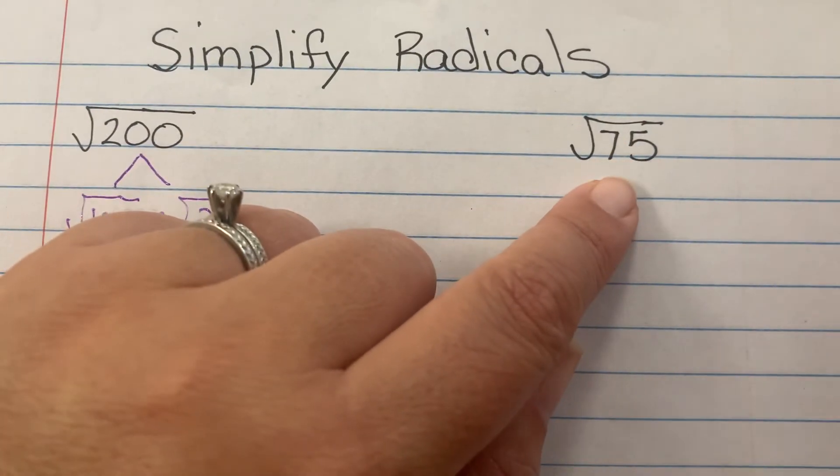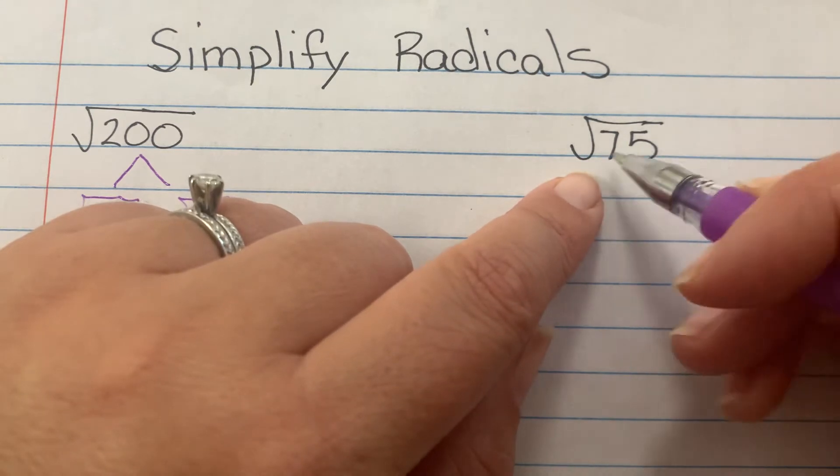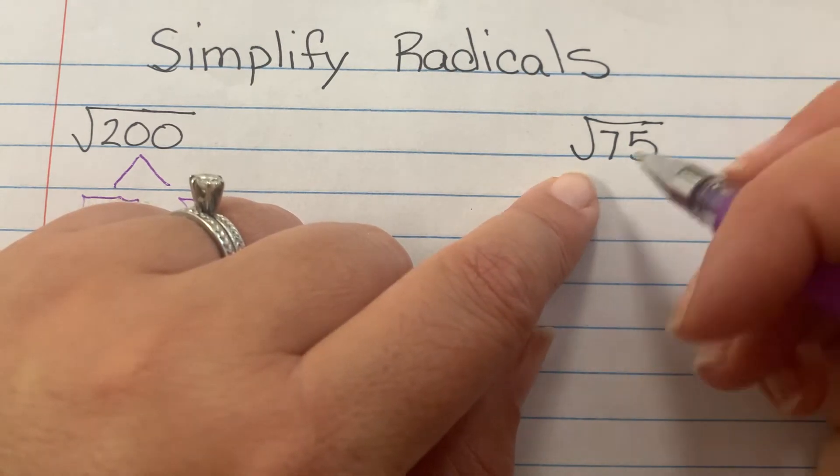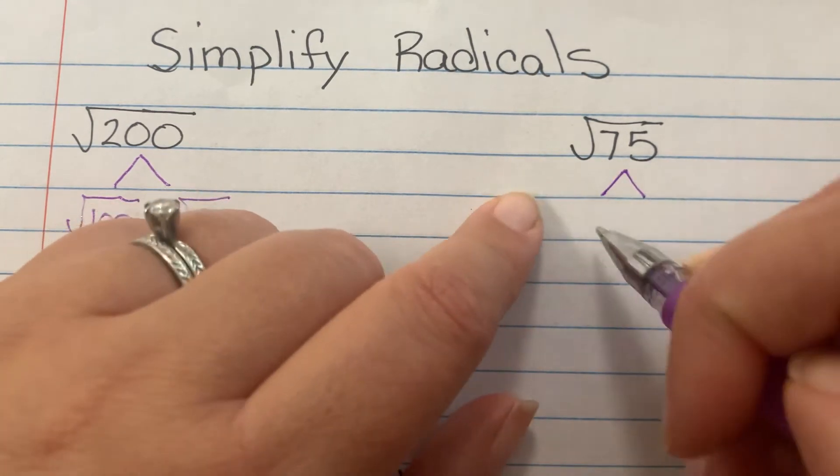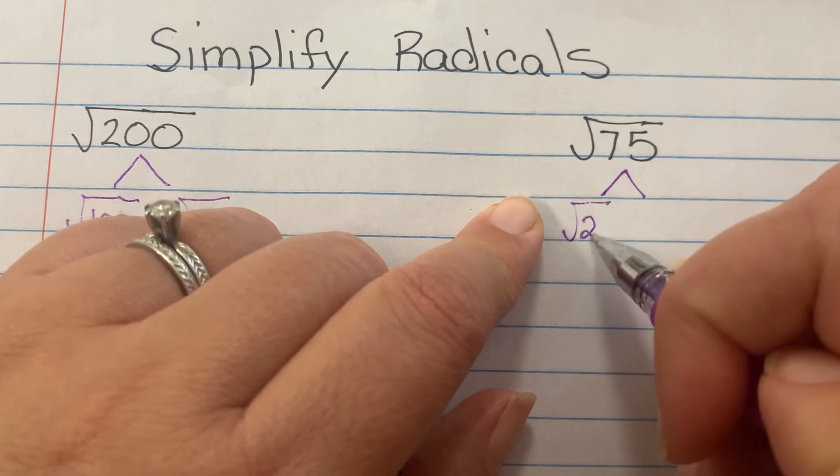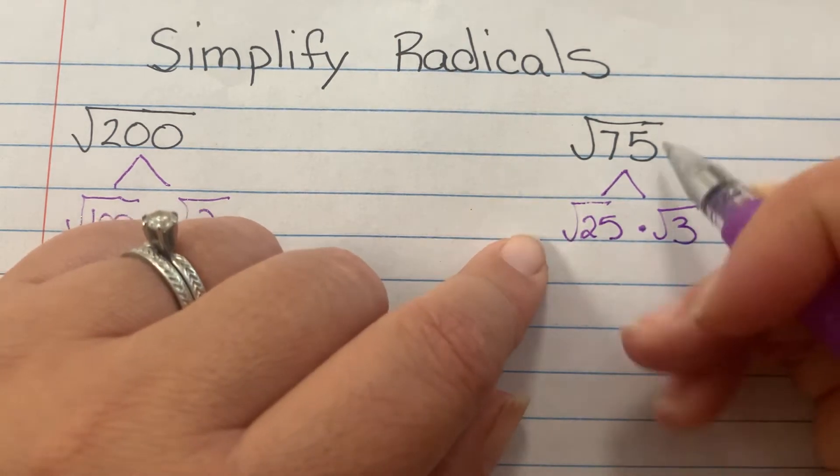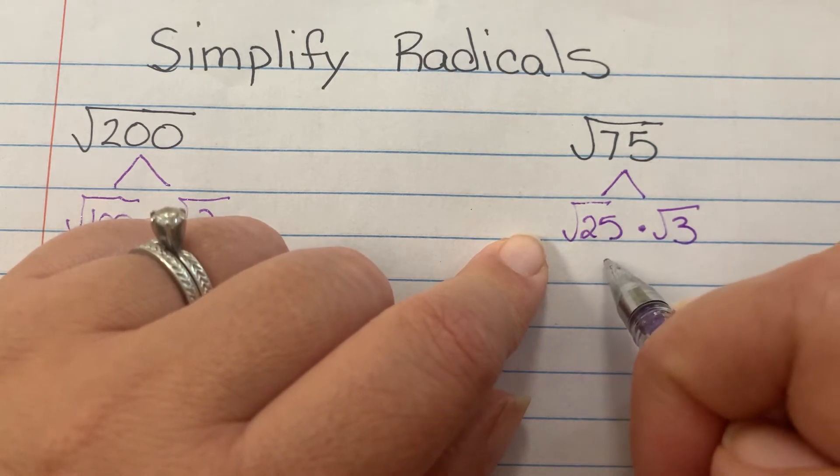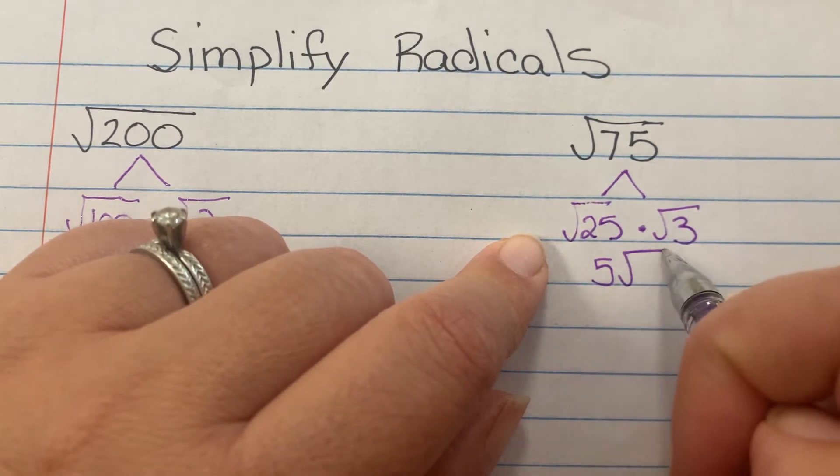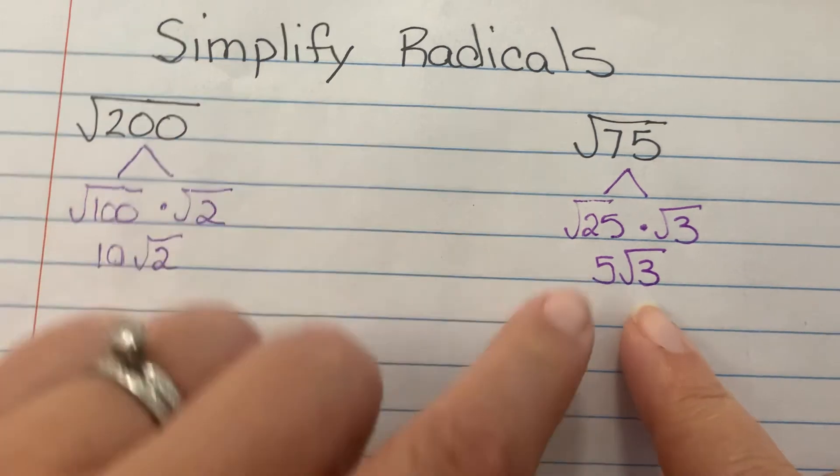This one, what would the perfect square be that's inside of 75? Yep, it would be 25. So 25 times 3 is 75, and then the square root of 25 is 5. The square root of 3, we just leave it, and that's it.